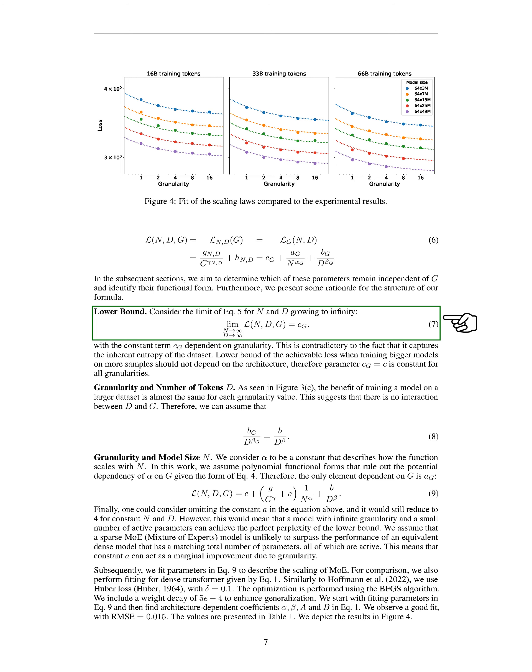In our exploration, we find that the benefits of using larger datasets are pretty much the same, no matter the level of detail in the model. This indicates that the size of the dataset and the level of detail in the model don't really affect each other. When it comes to how model size impacts performance, we assume a certain mathematical relationship that doesn't change with the level of detail. However, we do acknowledge that the specific impact of granularity could be represented by a particular parameter in our equations. We also touch on the idea that models with an infinite level of detail but fewer active parameters might theoretically achieve the best possible performance. However, we argue that in practice, a model that uses all of its parameters effectively is likely to perform better than one that only uses a few, even if it has a high level of detail. To better understand these relationships, we fit our theoretical models to actual data, using a specific type of model known as a mixture of experts and comparing it to a more traditional, densely connected model. We use a specific method to minimize error in our fits and adjust for overfitting to ensure our models generalize well to new data.